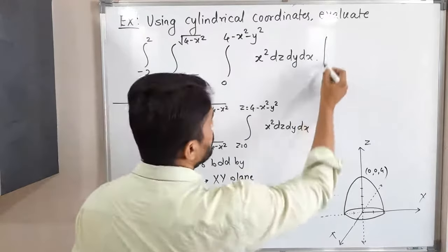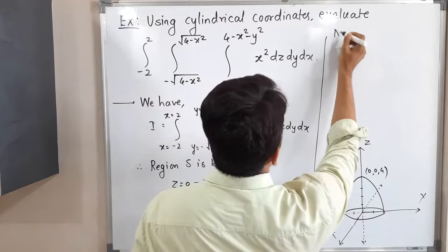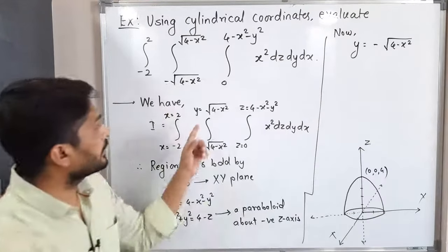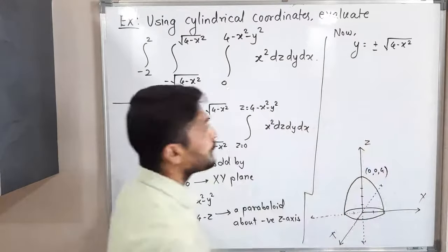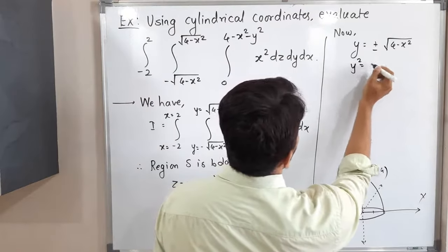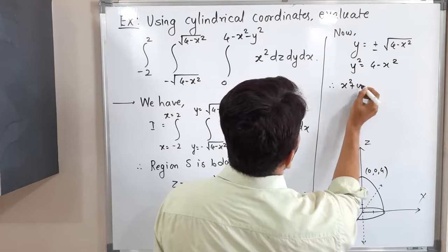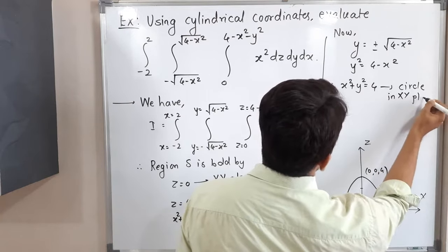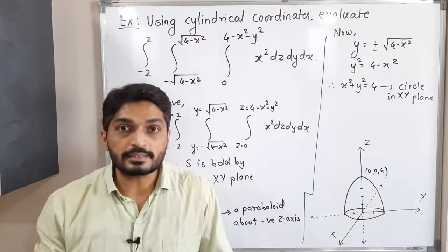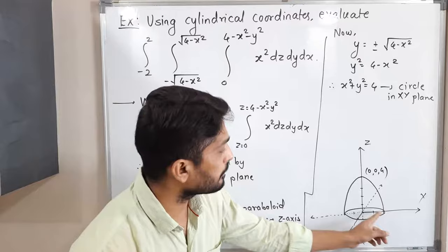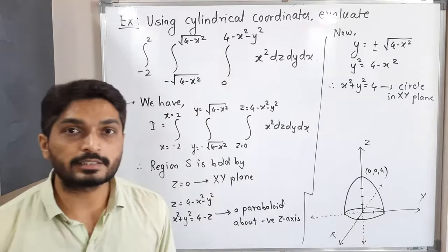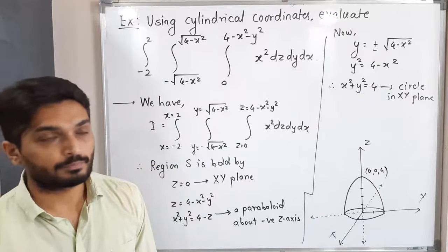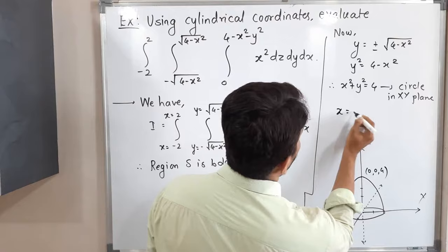For the y-limits, we have y = ±√(4 - x²). Squaring both sides gives y² = 4 - x², so x² + y² = 4. This is the equation of a circle in the xy-plane with center (0,0) and radius 2. In three dimensions, this represents a cylinder, but in the xy-plane it is a circle.